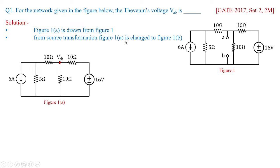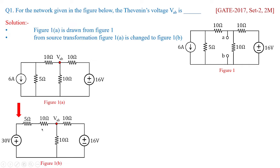From source transformation, figure 1A is changed to figure 1B. So this is figure 1B where you can see 6 amperes parallel to 5 ohms is changed to 30 volts in series with 5 ohms. How this is done? From Ohm's law, we know that V equal to IR and I is nothing but 6 and resistance is 5. So that is how we get the value as 30 volts.